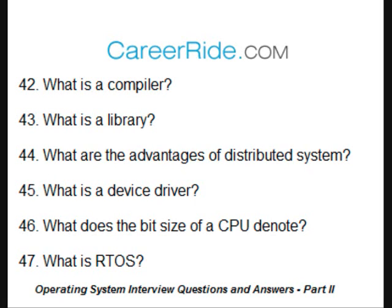What is a compiler? A compiler is a program that takes source code as input and converts it into object code. During the compilation process, the source code goes through lexical analysis, parsing and intermediate code generation, which is then optimized to give the final output as object code. What is a library? It is a file which contains object code for subroutines and data to be used by other programs.